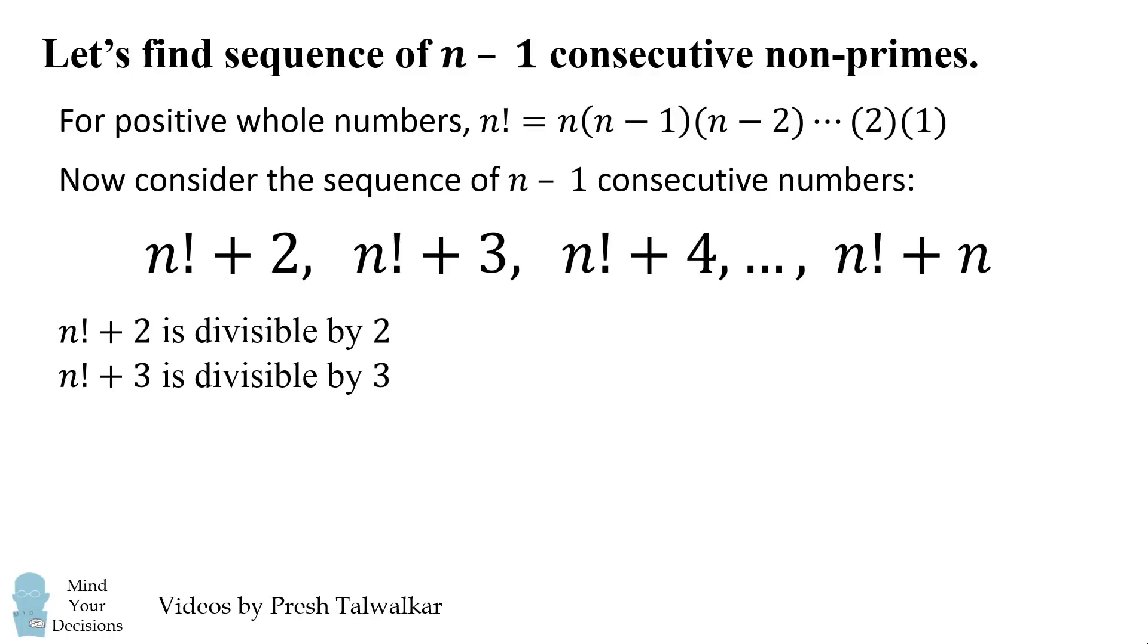Then n factorial plus 3 is divisible by 3 for a similar reason. n factorial is divisible by 3, and 3 is also divisible by 3. The next number is divisible by 4, and this continues all the way until n factorial plus n is divisible by n.